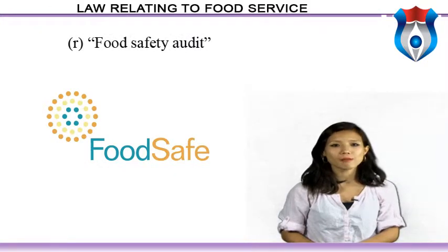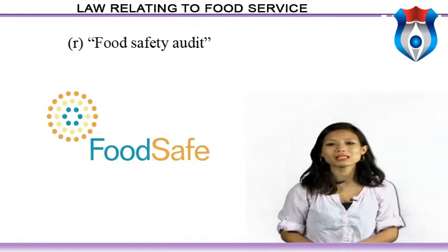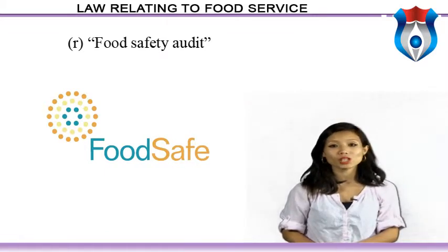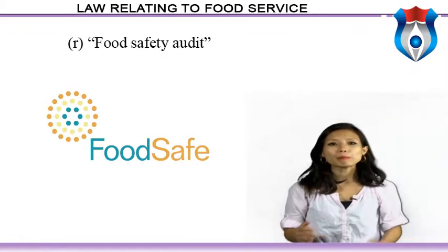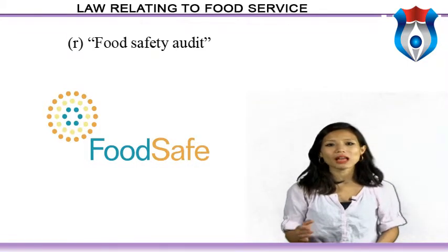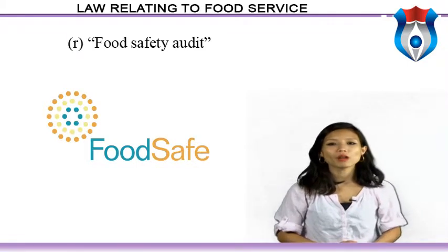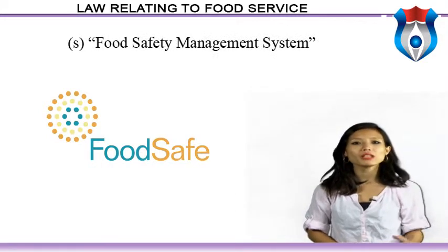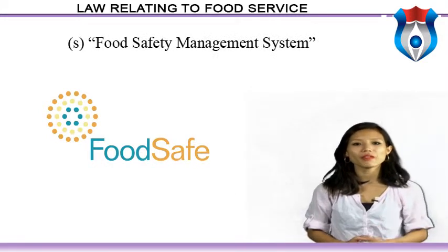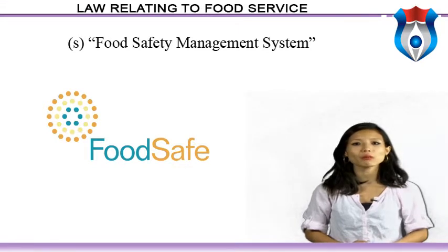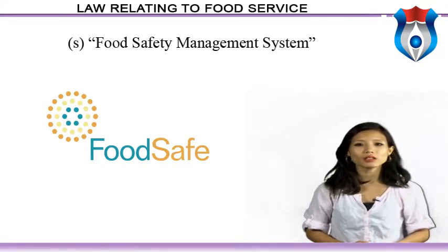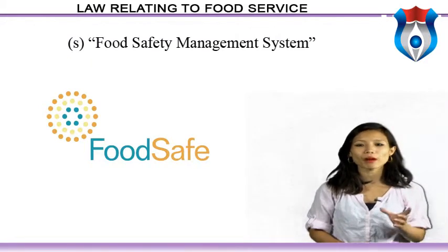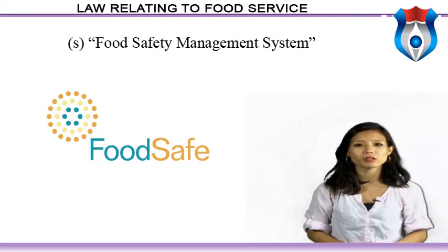Food safety audit means a systematic and functionally independent examination of food safety measures adopted by manufacturing units to determine whether such measures and related results meet the objectives of food safety and the claims made in that behalf. Food safety management system means adoption of good manufacturing practices, good hygienic practices, hazard analysis and critical control point (HACCP), and such other practices as may be specified by regulation for the food business.